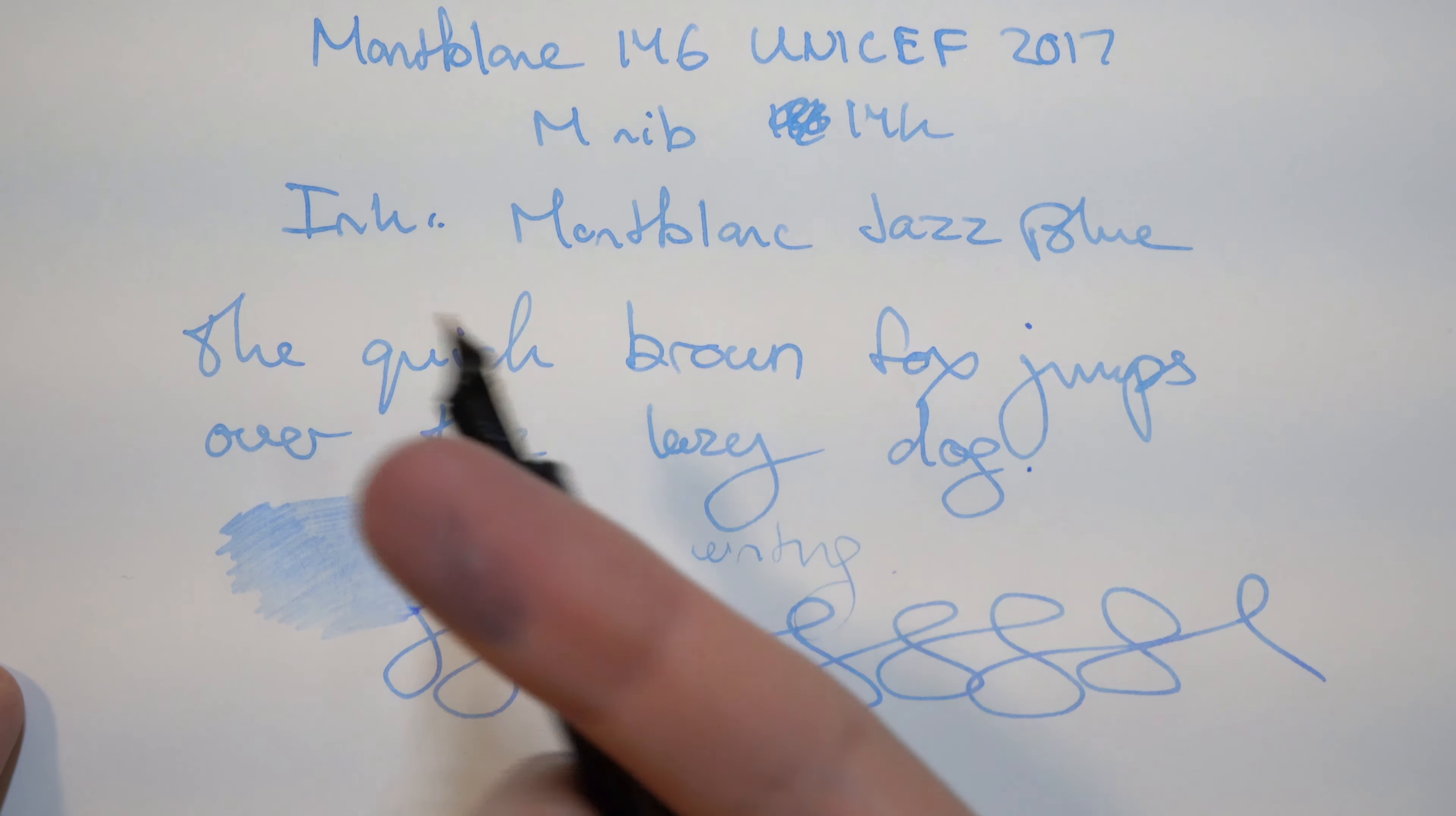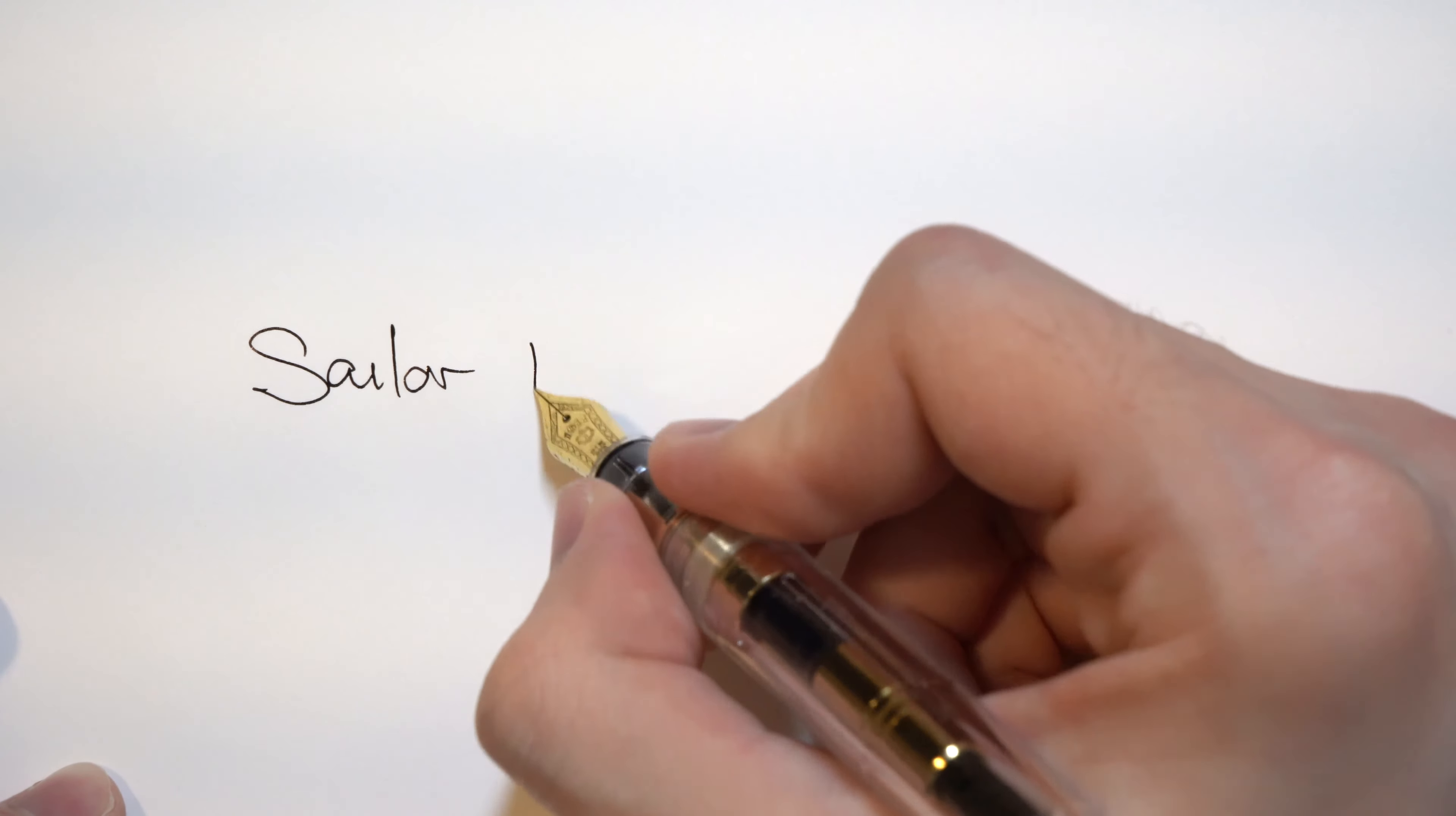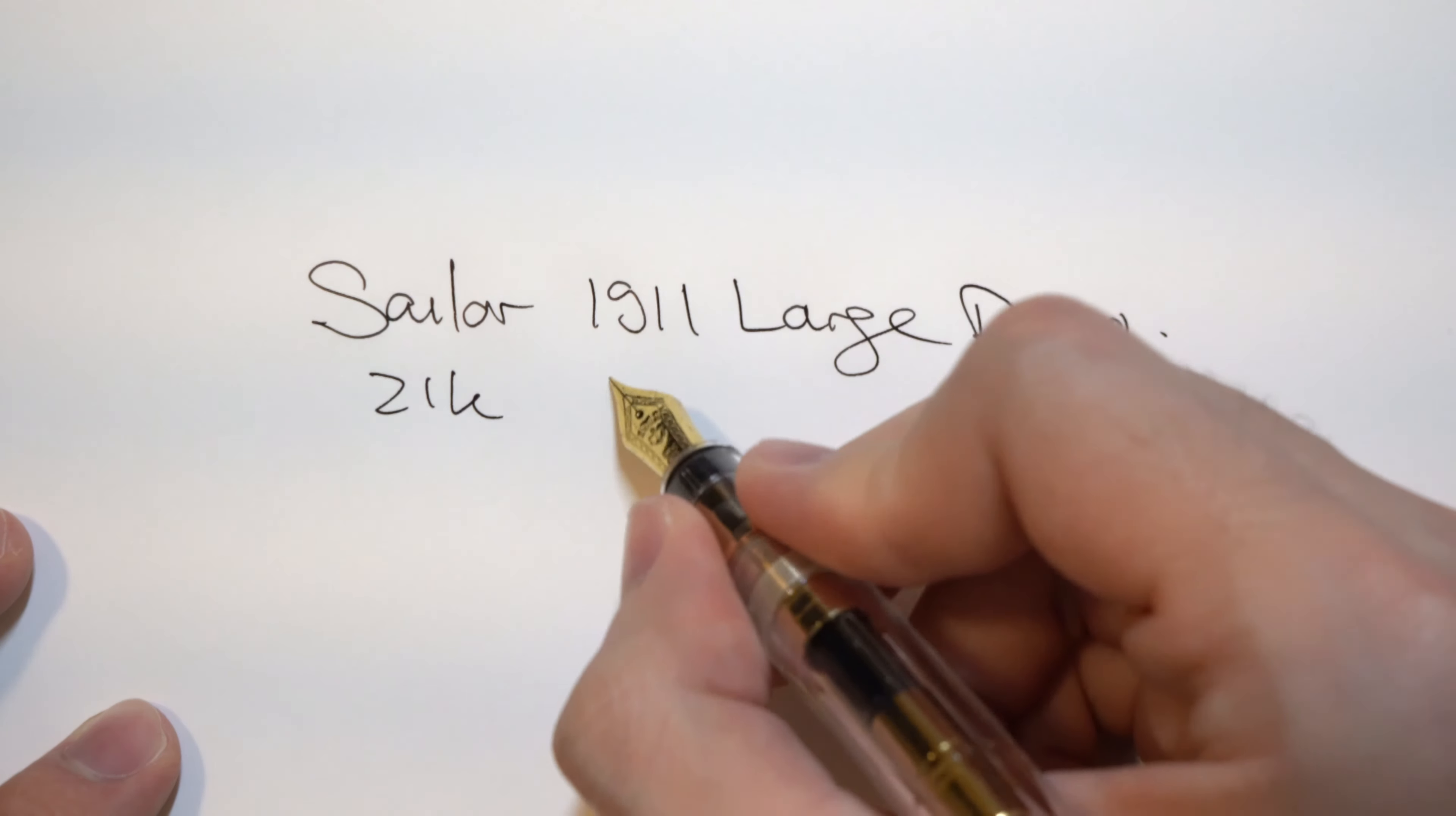Now let's get into the Sailor 1911 Large. The Sailor 1911 Large demonstrator version is a 21 karat gold nib. This is a fine nib compared to the medium nib of the Montblanc. This nib, as you can see, is very thin. This is a Japanese nib, so it's going to be thinner than the Western counterparts. The 21 karat gold nib is a joy to write with if you like pencil-type feedback. That's what Sailor is known for.